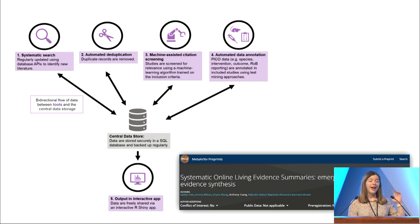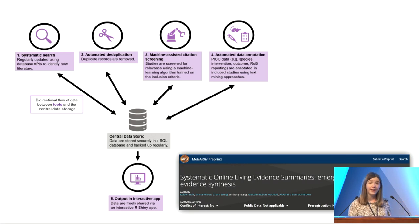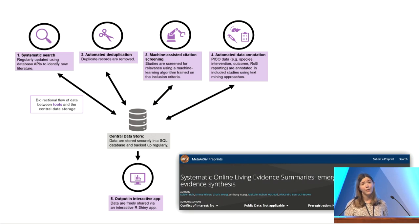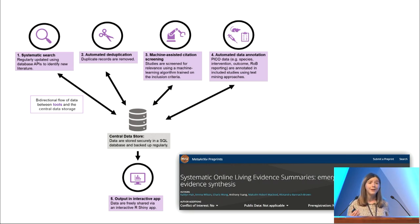At a very basic level, there's a systematic search performed for each SOLS project on a weekly basis using application programming interfaces to pull in recent citations. They're automatically deduplicated. We have machine learning classifiers for each SOLS project to screen for relevance. And then we have a range of natural language processing tools that can tag for things like reporting of risk of bias, PICO elements — outcome measures, interventions, populations — and also transparency aspects like whether there was an open data statement or whether the paper was open access. This annotated dataset is put into a SQL database that sits behind the interactive web application.